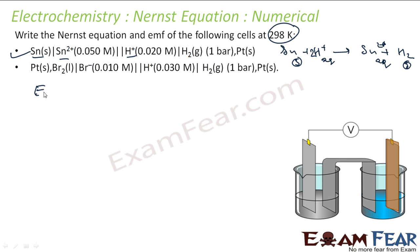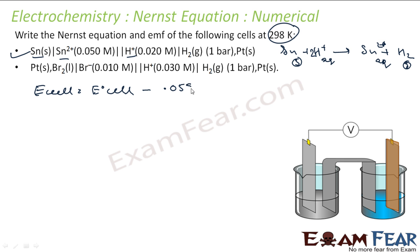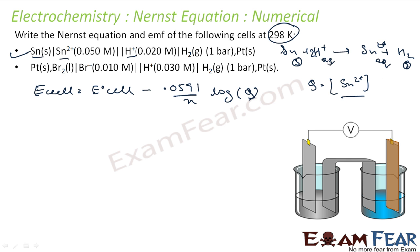We know the Nernst equation: E_cell = E°_cell − (0.0591/n) × log Q. Q for this reaction is the concentration of Sn²⁺ times the concentration of H₂ (which is 1 for gas at standard), divided by the concentration of H⁺ squared — squared because there are two H⁺.